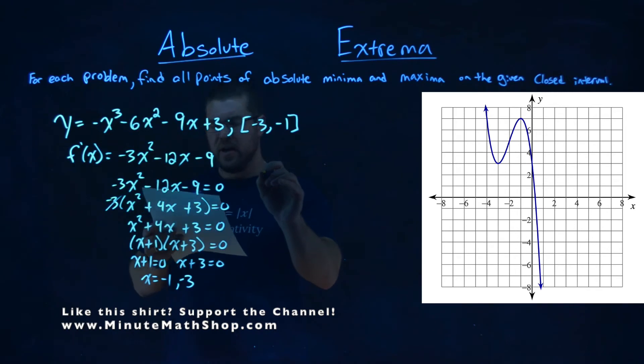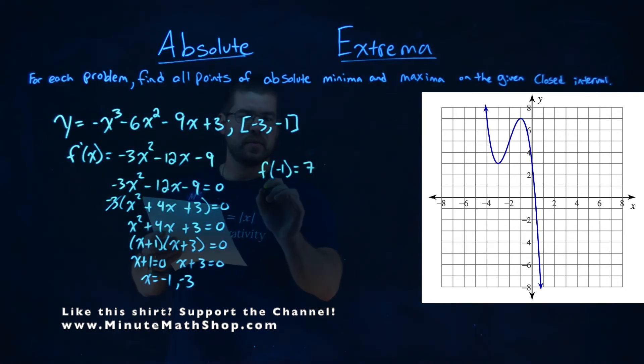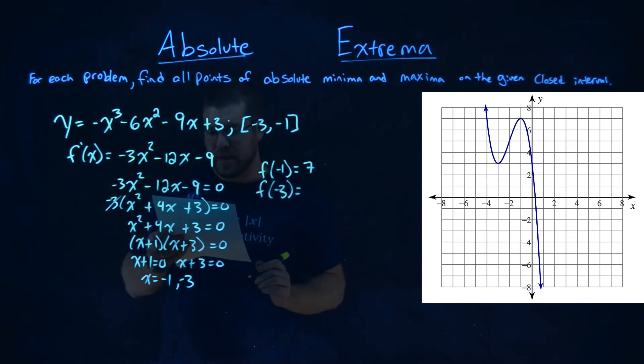To do that, we find what f of negative 1 is, plugged into our original equation, and that came out to be a positive 7. We have f of negative 3 in our original equation, and that came out to be a positive 3.